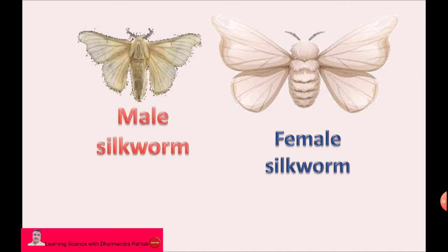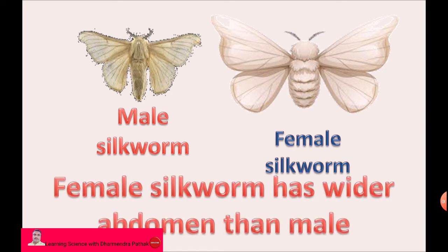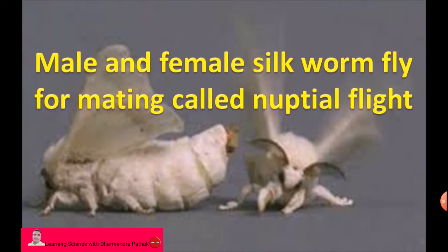The female silkworm has a wider abdomen than the male, because the grown ovary causes the wider abdomen to form. Male and female silkworm fly for mating, which is called nuptial flight.